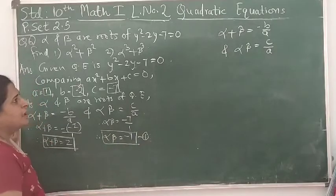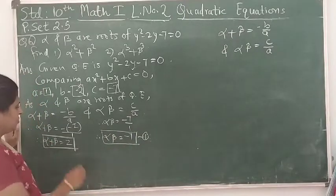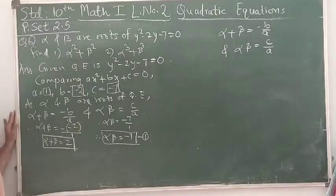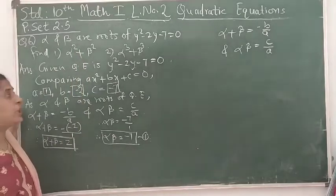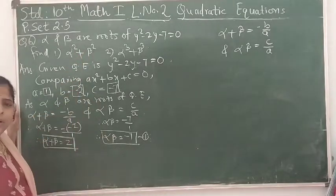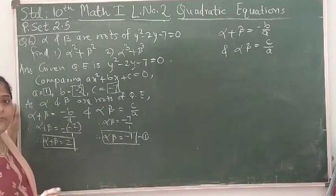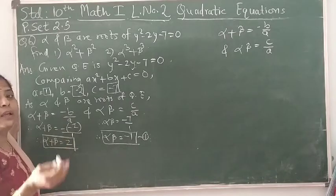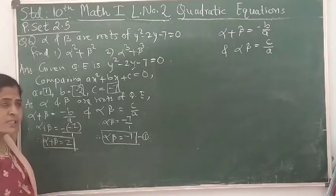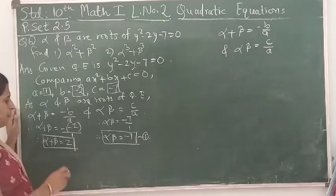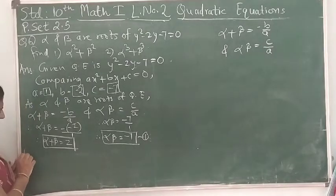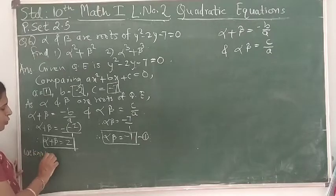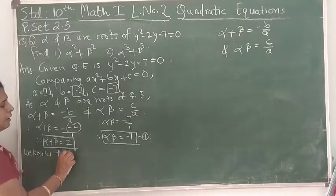Now we have to find α² + β². To get the squares, we can square the binomial sum. Let's use the expansion property: we know that (a + b)² = a² + 2ab + b².